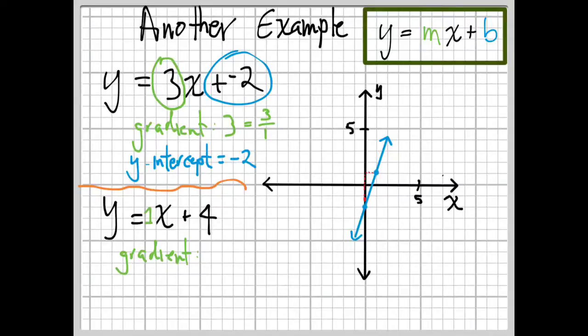Multiplying by 1 doesn't change anything. You can always stick a 1 in front of any pronumeral or multiply any number by 1. It doesn't change anything. If you think about it, how many x's did we have there? We had 1. Up here, we've got 3 x's. Down here, we have 1 x. So, that's our gradient. Our gradient is 1.